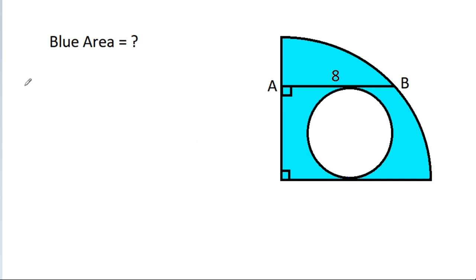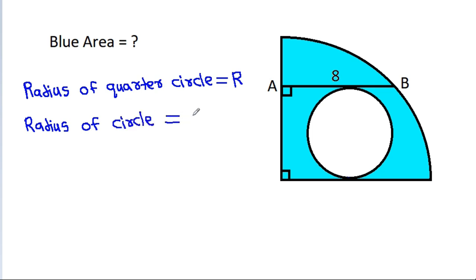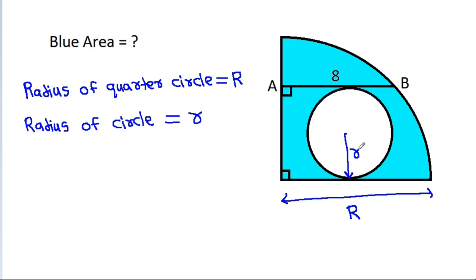Suppose the radius of the quarter circle is equal to capital R and the radius of the circle is equal to r. So this radius is capital R and this radius is r.